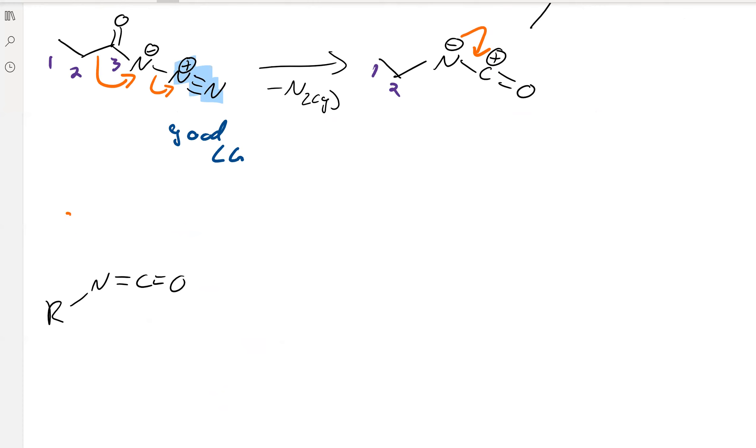And then once you've got the isocyanate, it's a very good electrophile, right? The central carbon is doubly bonded to two electronegative atoms, and so we can do different stuff with it. We're just going to attack it with water.